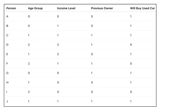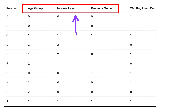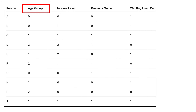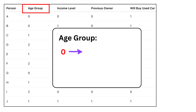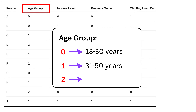Let me first explain the data set we have. For each person, we have three main features. The first feature is called age group — instead of writing full age ranges, we use numbers to represent them. If age group is 0, the person is young, between 18 and 30 years old. If it is 1, the person is middle-aged, between 31 and 50. If it is 2, the person is considered a senior, meaning 51 or older.